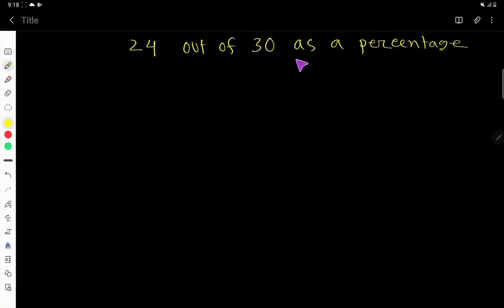24 out of 30 as a percentage. Let us translate. Here we have 24, then 'out of' means this fraction bar or division sign, then 30, and we need to express this fraction as a percentage. Percentage means one